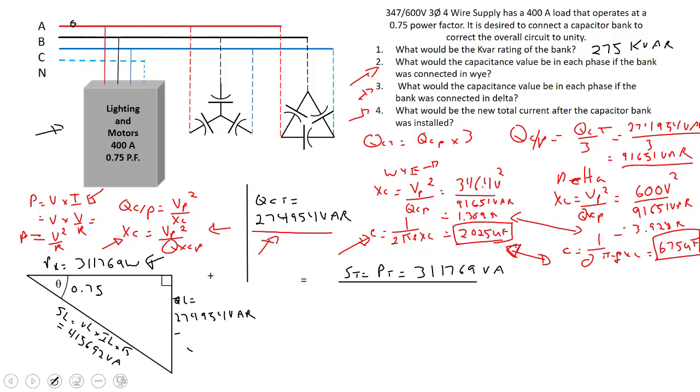Last question, number 4: What would be the current after we corrected this? That's this S total here. We just got to figure out the line current based off our total VA of the circuit. If I were to put an ammeter right here, we're determining what it would be. S total equals V line times I line times root 3. Solving for I line, I have to take S total divided by V line times root 3.